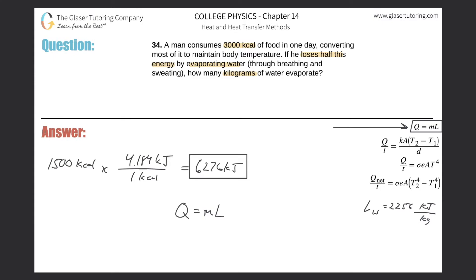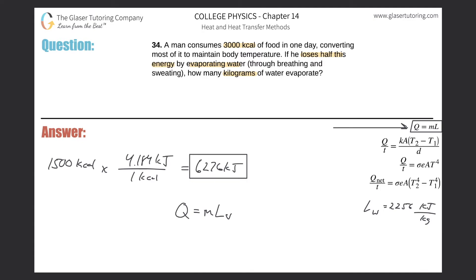In this case, we're talking about evaporating water — going from a liquid to a gas — so that would be the latent heat of vaporization of water. The table in the book gives it in kilojoules, and we found our energy in kilojoules, so since the units are consistent, we can just plug them both in and solve for the mass.